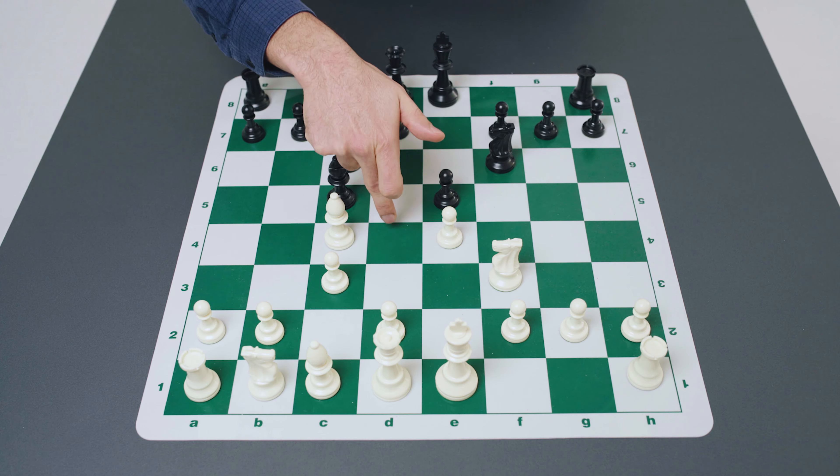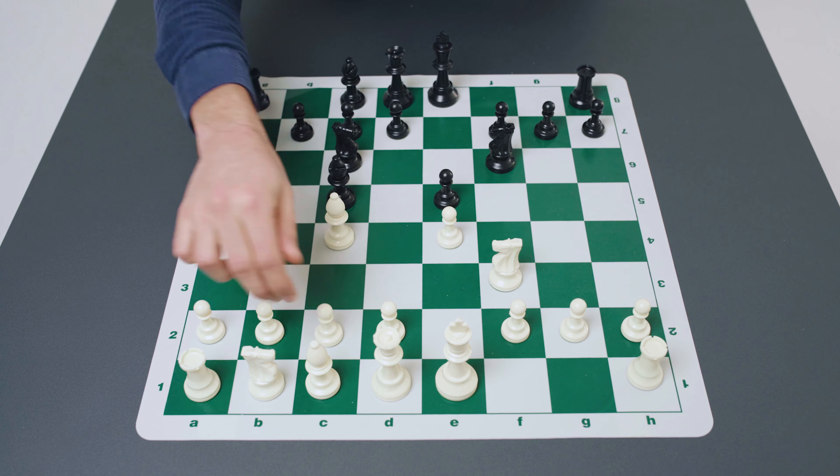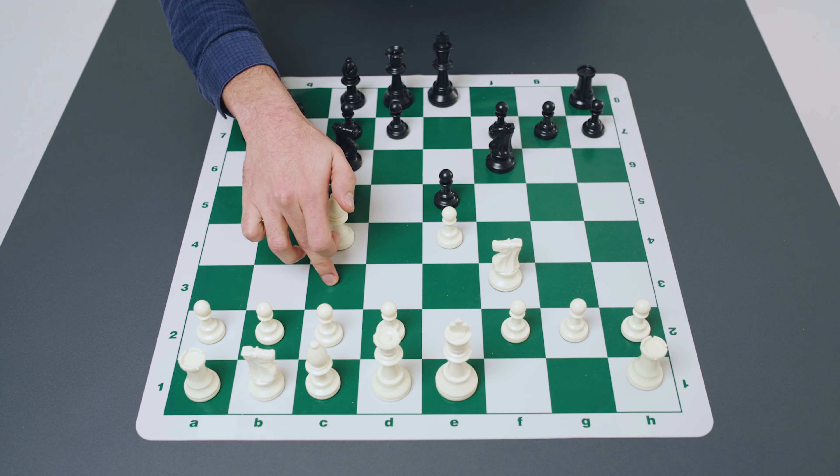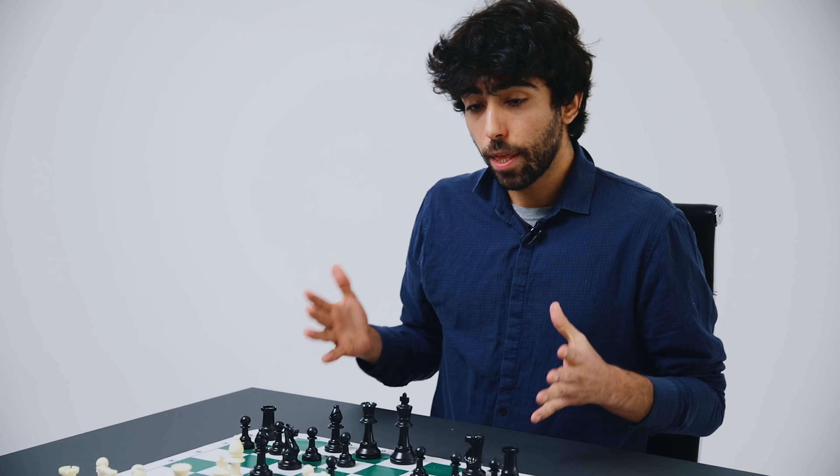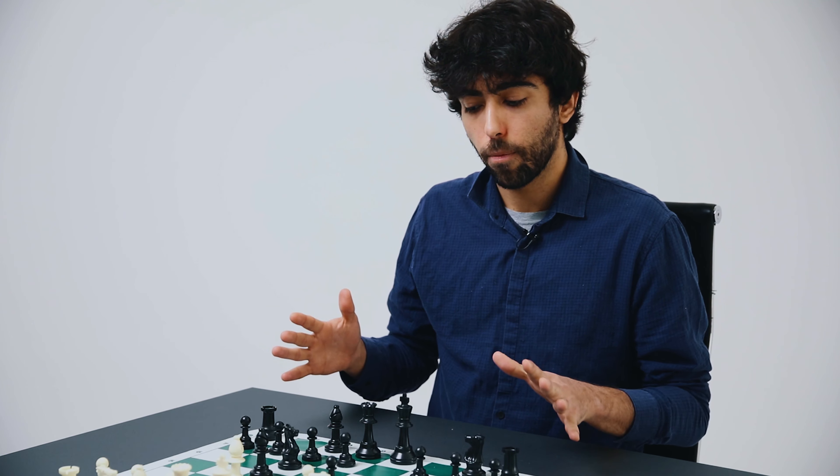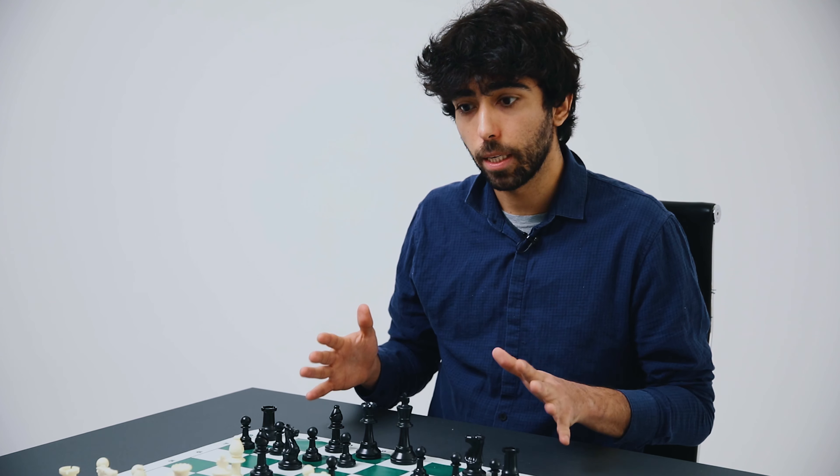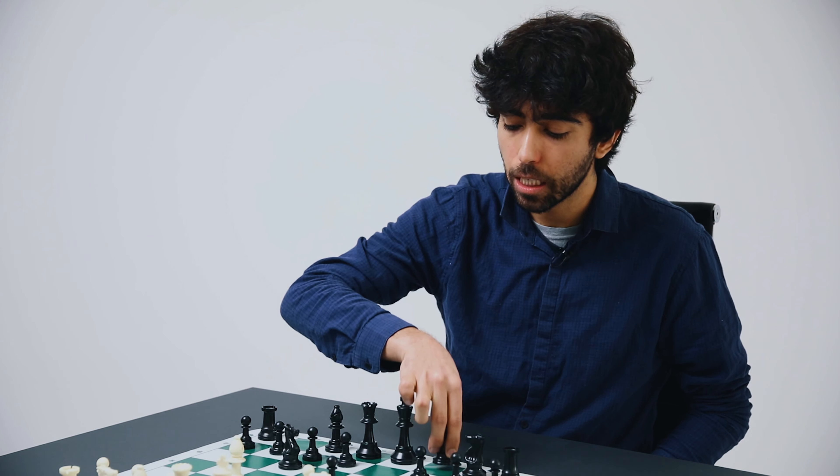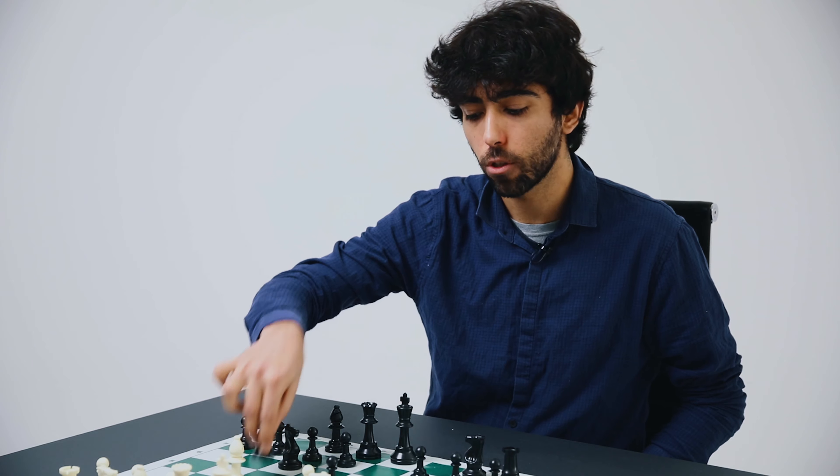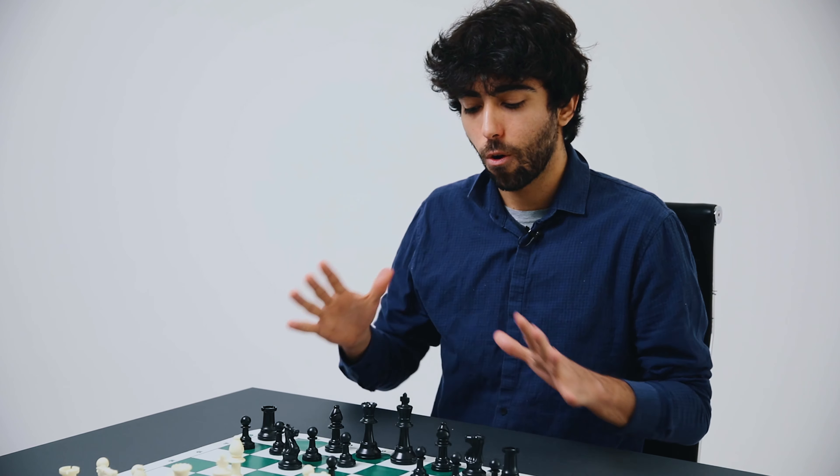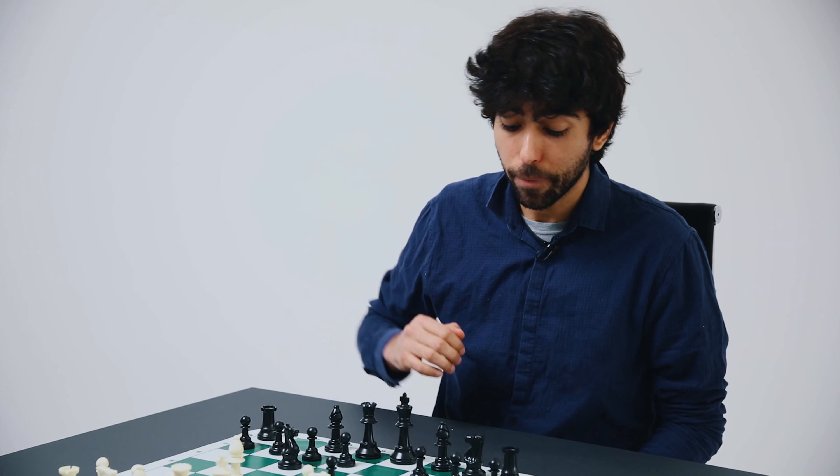Besides this we're also going to be covering the natural move kingside castle for white. Here black has several responses but the most common response for black is knight to f6 continuing his development and here we have a very interesting additional gambit.